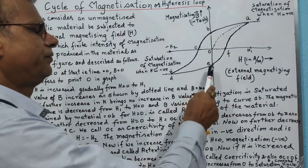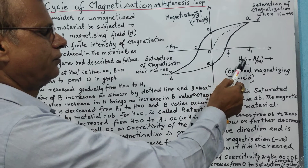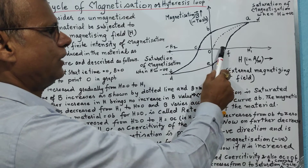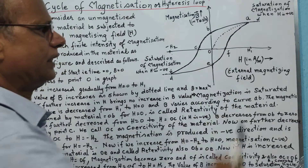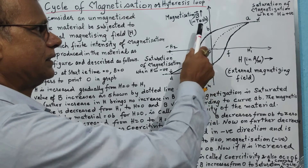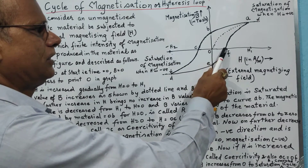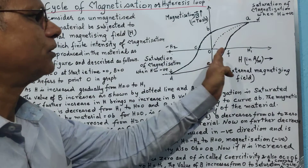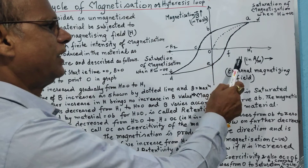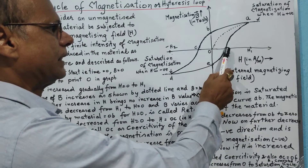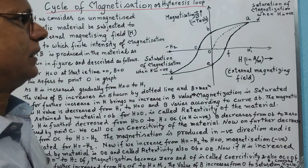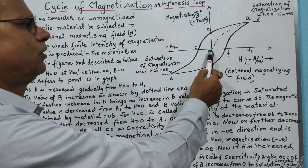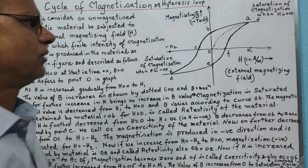When we further increase the value of H from zero at point E to a certain positive value corresponding to point F, the intensity of magnetization in the material — which was in the reverse direction — becomes zero at point F. That value OF is known as coercivity, and OF is always equal to OC.